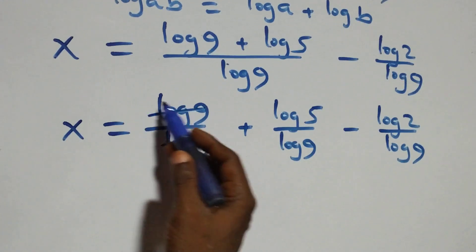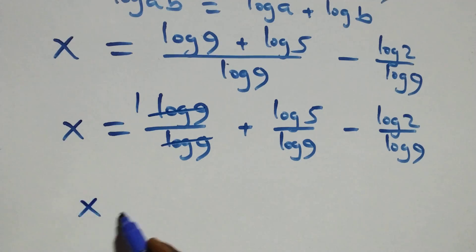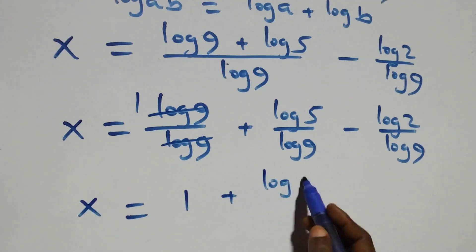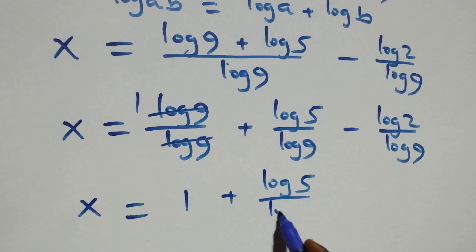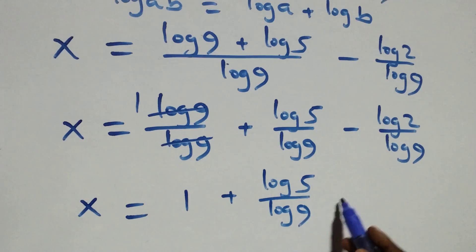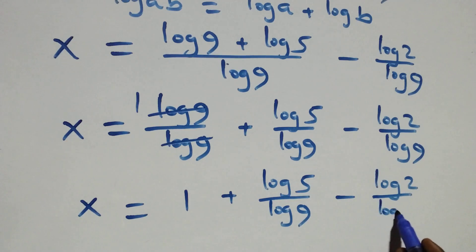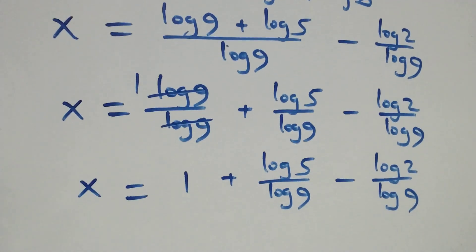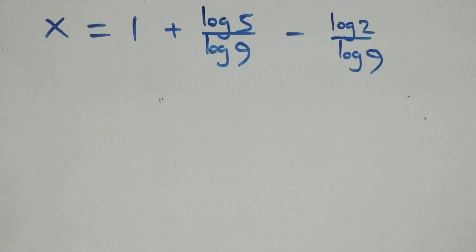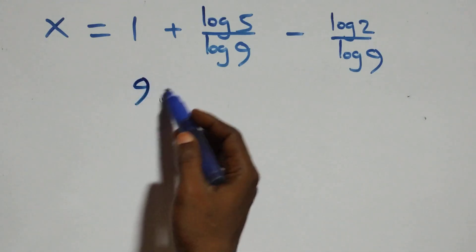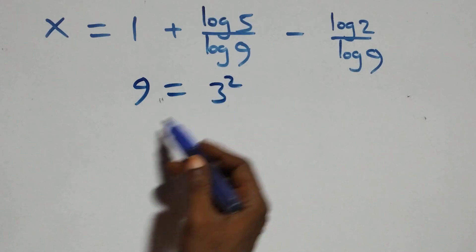Log 9 cancels each other and we have 1 left. That is, x equals to 1 plus log 5 over log 9 minus log 2 over log 9.